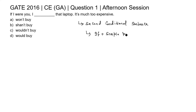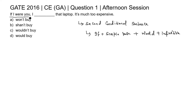In the second part of the sentence, the structure is 'would' plus infinitive. So here, in the first part 'if I were you' is 'if' plus simple past, and in the second part we need to select 'would' plus V1.